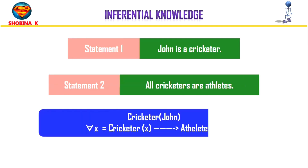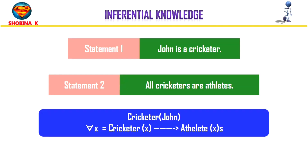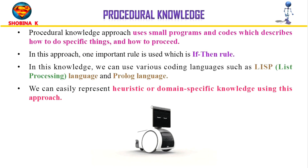Next, inferential knowledge represents knowledge in the form of formal logic, which can be used to derive more facts and guarantees correctness. For example: 'John is a cricketer' and 'all cricketers are athletes' — you can represent this as cricketer(John) and derive the relationship that cricketers are athletes, checking the relationship between John, cricketer, and athlete while guaranteeing correctness.